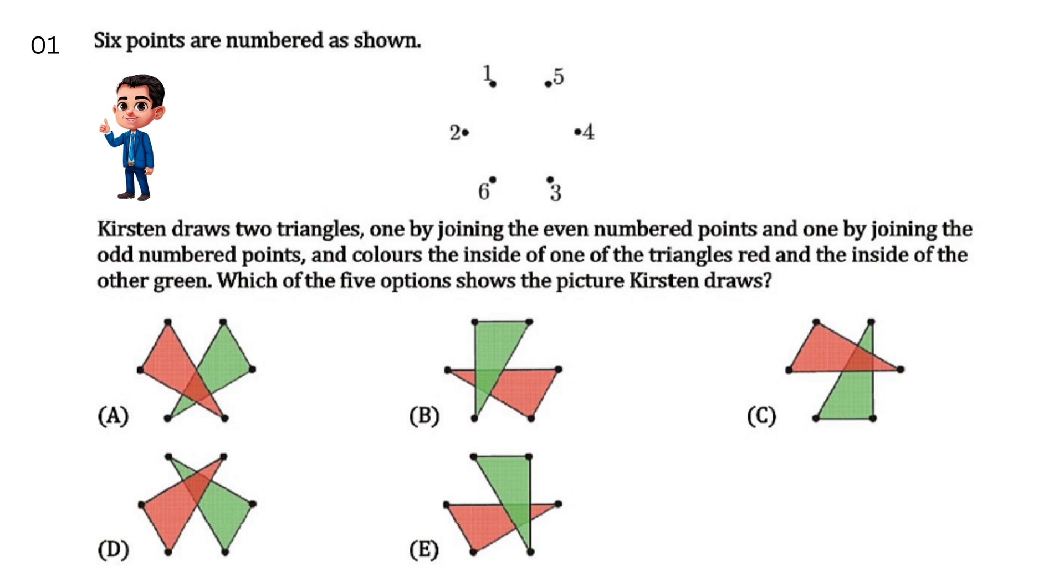Six points are numbered as shown. Kristen draws two triangles, one by joining the even number points and one by joining the odd number points. The colours of one triangle is red inside and the other is green inside. Which of the five points shown in the picture Kristen draws?